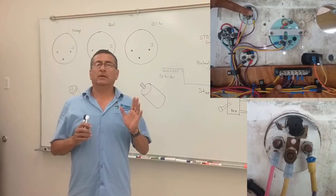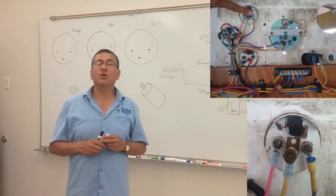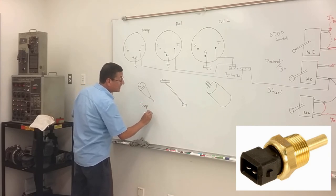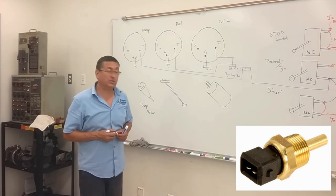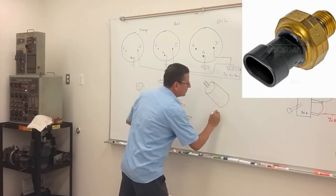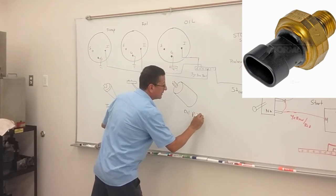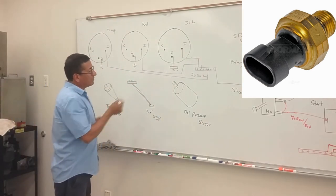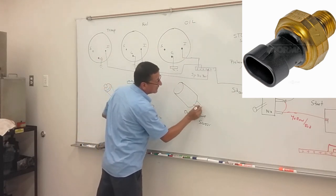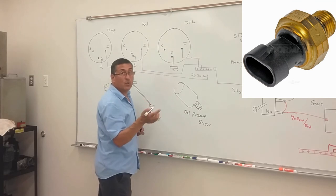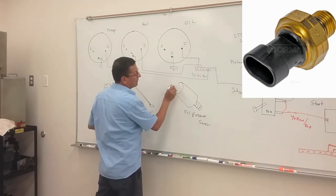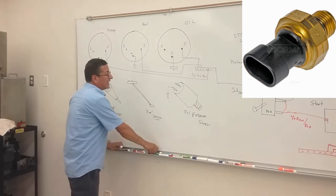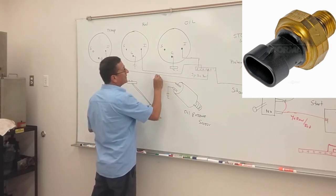This is the procedure to install the switch. Remember, in order to send the signal to the gauge, we are going to use the sensors. This is the temperature sensor, located on the thermostat housing. And this is the oil pressure sensor, bolted on the bracket where the oil filter is located. Normally, the oil pressure sensor has two terminals — one terminal for ground and the other terminal to send the signal for the gauge.